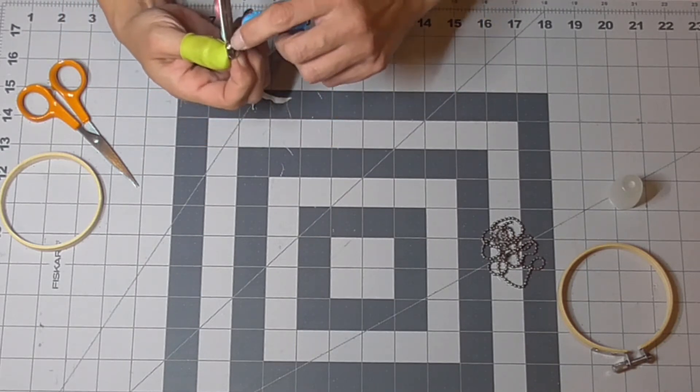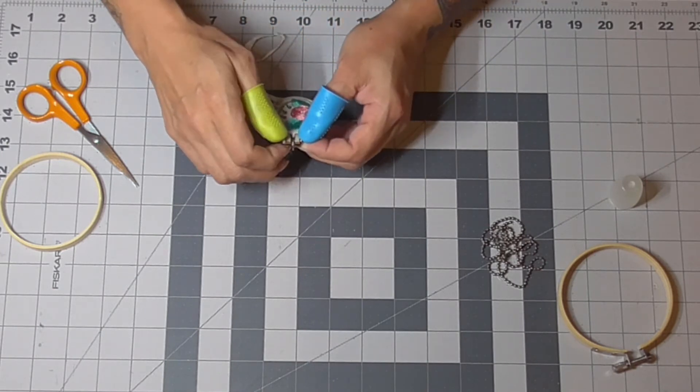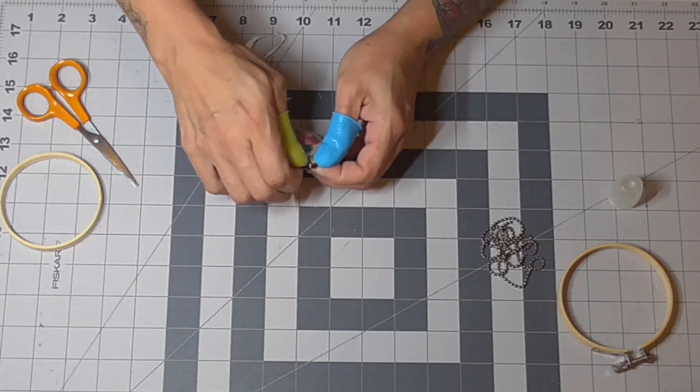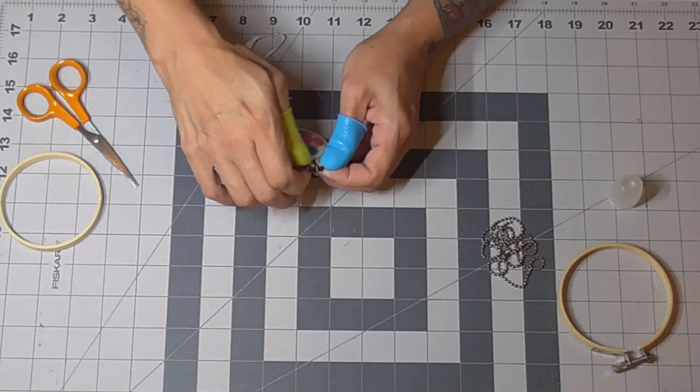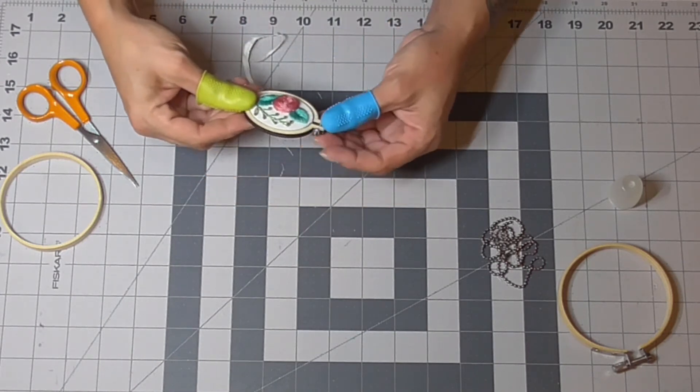Tighten it all the way down. Now this is a Phillips head, so if you have a little screwdriver that might help. Hold everything in place. And then you are going to let it dry.